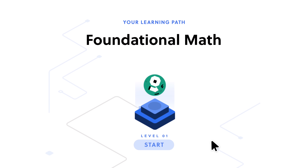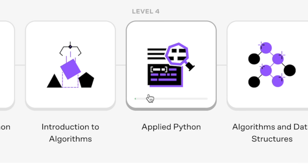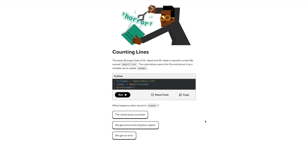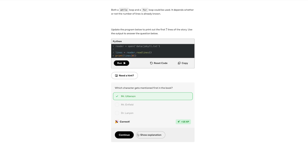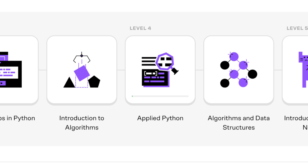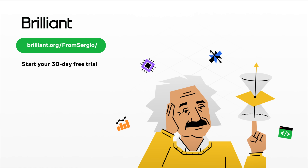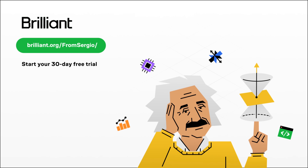And if you want to take your math skills to the next level, I highly recommend checking out today's sponsor, Brilliant.org. Brilliant is where you learn by doing, with thousands of interactive lessons in math, data analysis, programming, and AI — built from the ground up, which has been proven to be six times more effective than simply watching lecture videos. A great example is the course I'm taking right now called Applied Python, which teaches you how to use Python to work with text — the core of AI tools like ChatGPT. To try everything Brilliant has to offer free for a full 30 days, visit brilliant.org/fromSergio, and you'll also get 20% off an annual premium subscription.